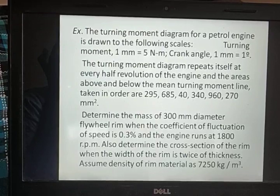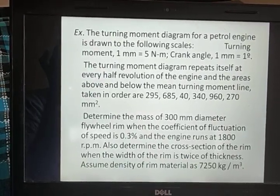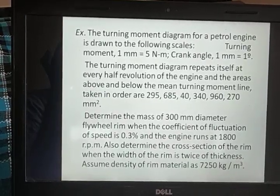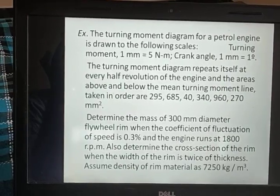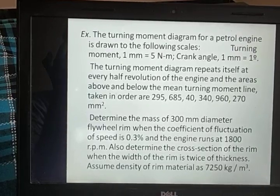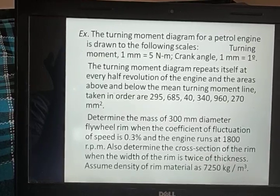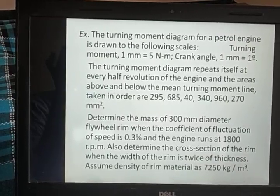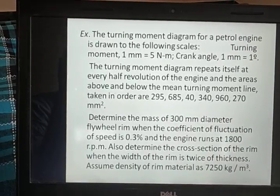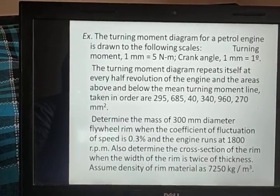The engine runs at 1800 rpm and the diameter of the flywheel rim D is 300 mm. We also need to determine the cross-sectional area A of the rim when the width B equals 2 times the thickness T. The density of the rim material is 7250 kg per cubic meter.